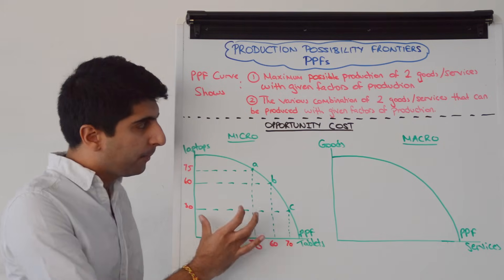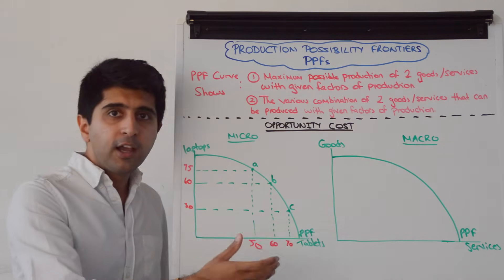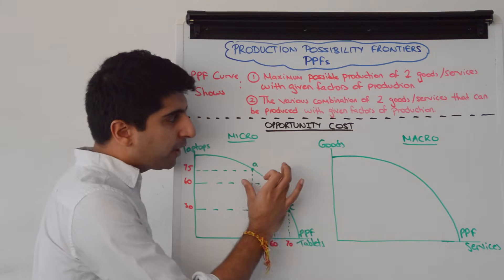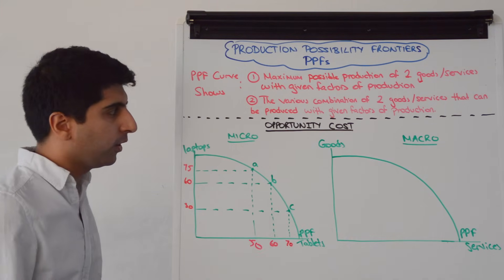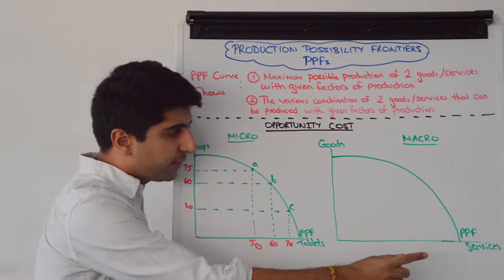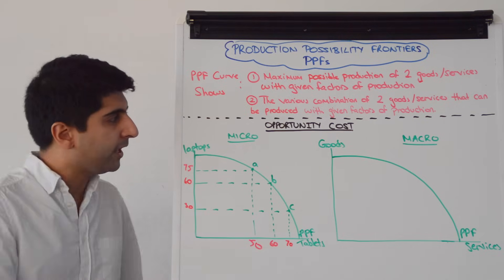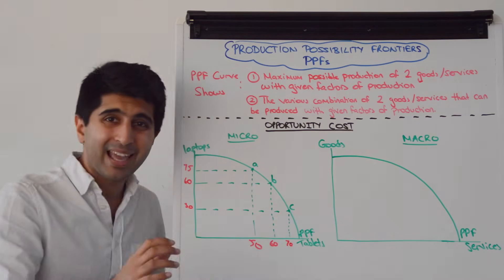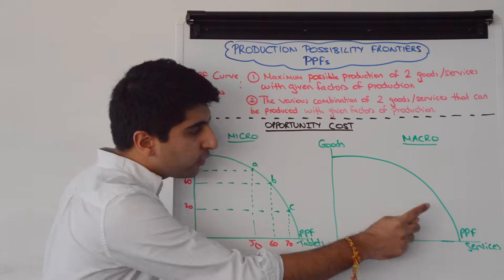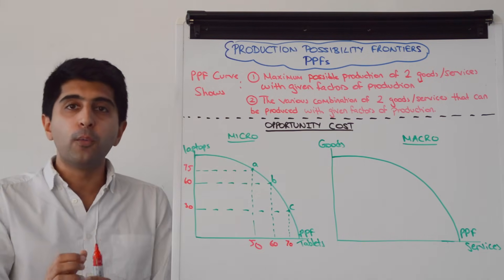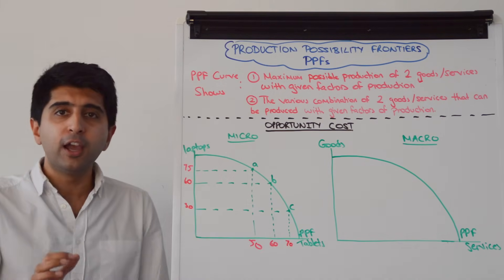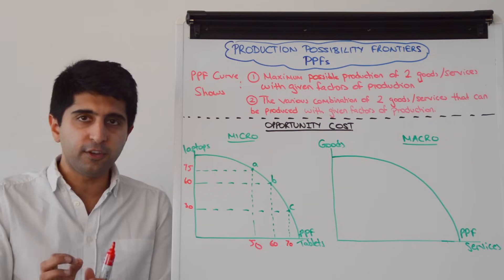A PPF curve drawn concave indicates the law of increasing opportunity cost. The more that we produce of something, the more of the other thing that has to be given up each time. A 10-unit increase in tablets each time means more units of laptops have to be given up in each case. On a macro PPF, labelling the axes as 'goods and services' or 'consumer goods and capital goods' indicates we are looking at the entire economy, and any concave PPF illustrates the law of increasing opportunity cost.